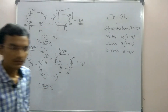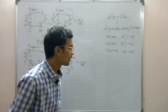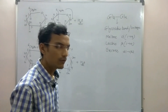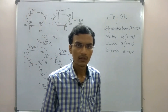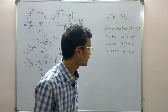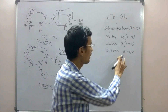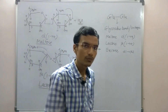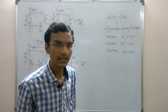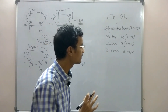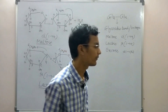The next disaccharide is sucrose. In sucrose, glucose and fructose are joined with an alpha-1 beta-2 bond, meaning glucose is in alpha configuration and fructose is in beta configuration.